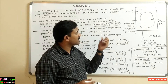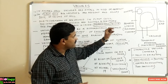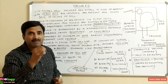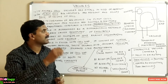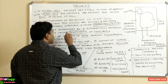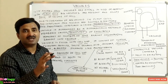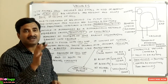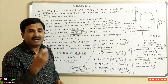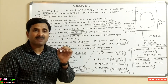The vacuole is surrounded by a differentially permeable membrane, and that membrane is called the tonoplast membrane. You must remember this name — it is asked at least two to three times in the medical entrance examination. The vacuole is surrounded by a lipoprotein membrane called the tonoplast membrane, and it is a differentially permeable membrane having a nature similar to the cell membrane.